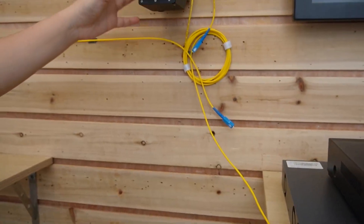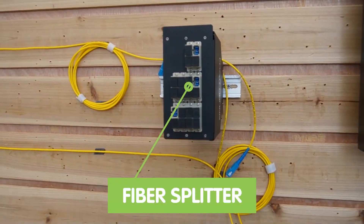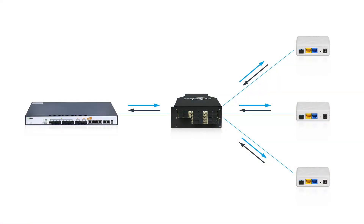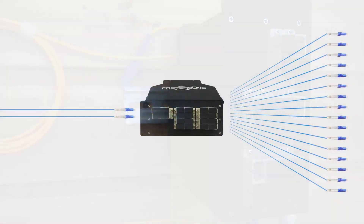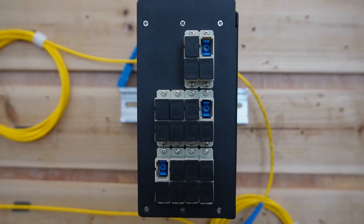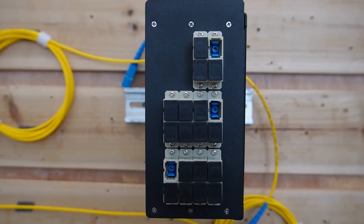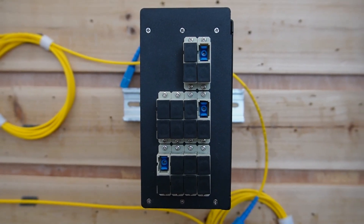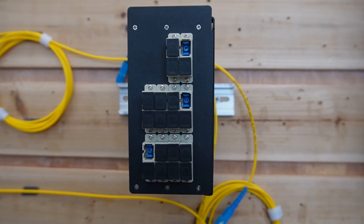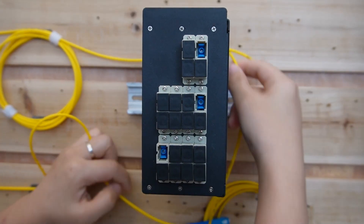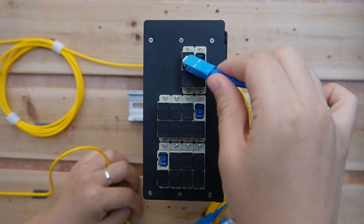Coming over to this side, we have our fiber splitter. It offers a cost-effective way to split optical signals into multiple output paths in a point network, efficiently splitting optical signals into 16 channels to connect multiple network devices simultaneously. It also ensures reliable connectivity with redundant fiber networks, providing backup in case of any link failure. Now I'm going to connect it with our OLT.